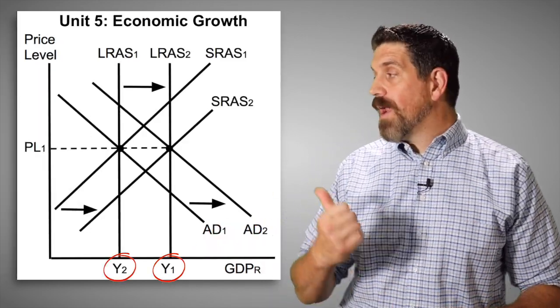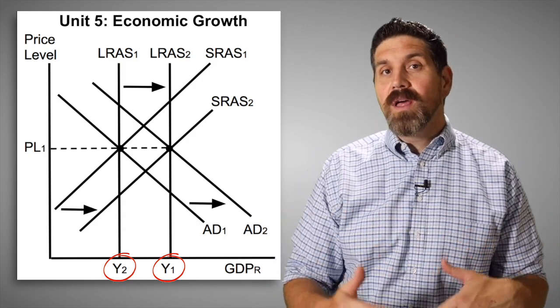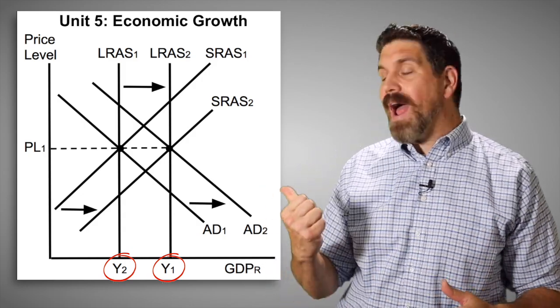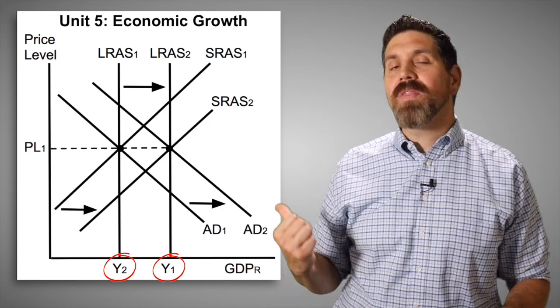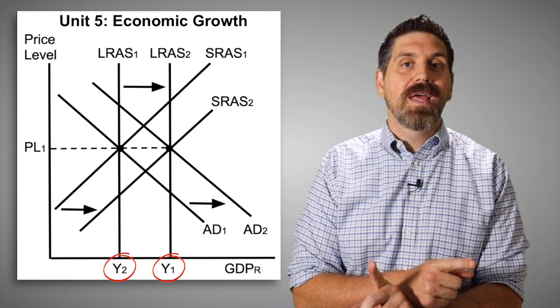And here in unit five, you also draw the graph for economic growth. It's just like what you learned back in unit one with the shifting outward of the production possibilities curve. Now, if you look at this graph, there's only one thing wrong. It's here on the bottom. It's Y1 and Y2. Those are both mislabeled. You got to switch them.